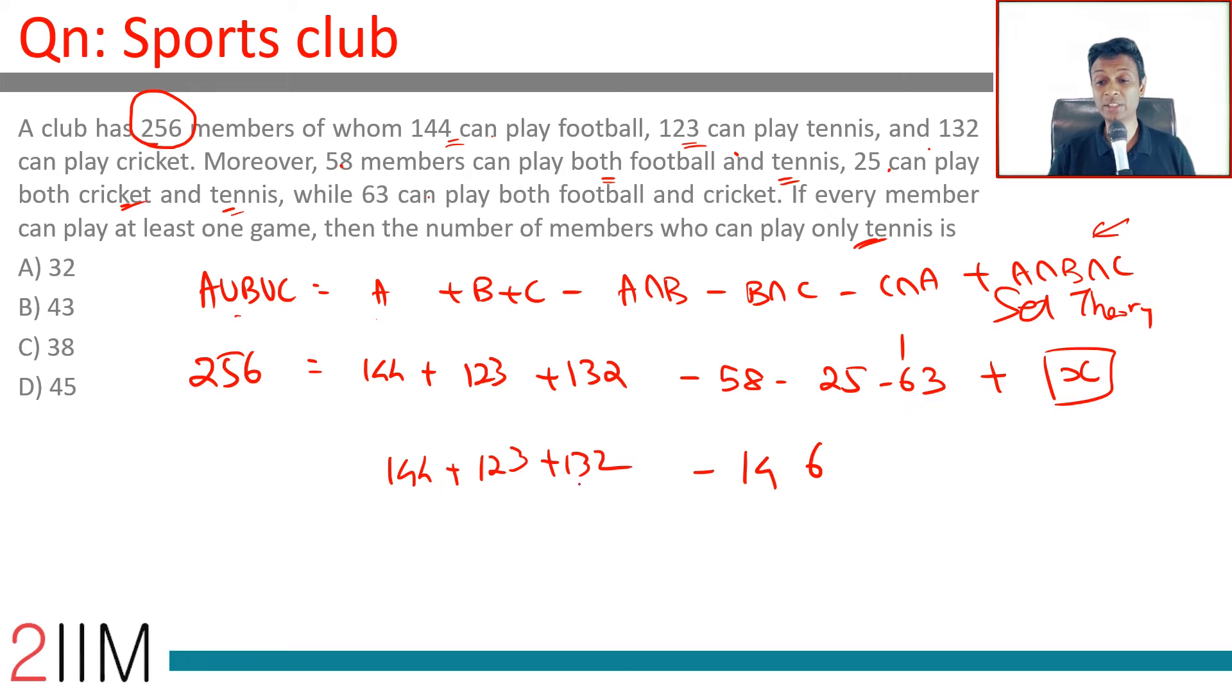144 plus 123 plus 132 minus 146: 144 minus 146 is minus 2, 123 plus 132 is 255, minus 2 is 253. So 253 plus x is 256, or x is 3. Now we can come back to the diagram angle of this.